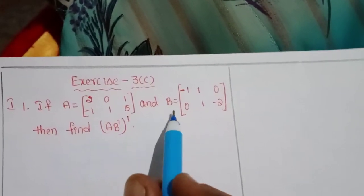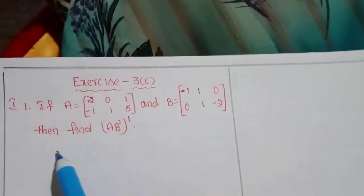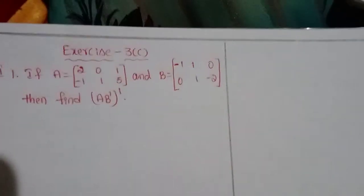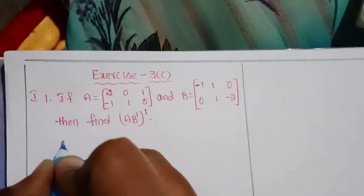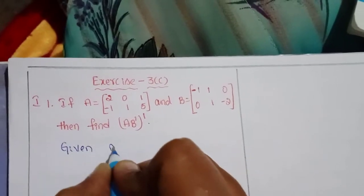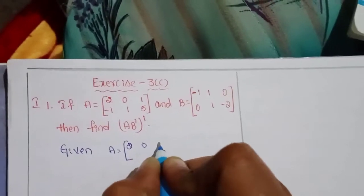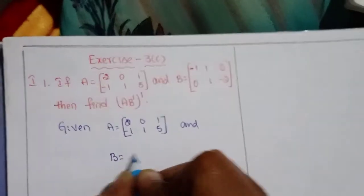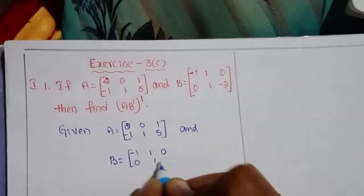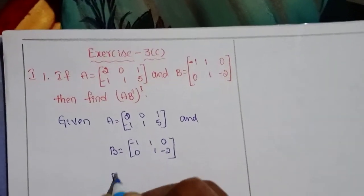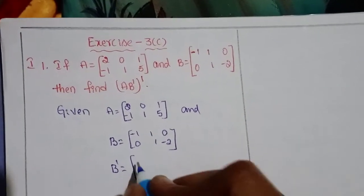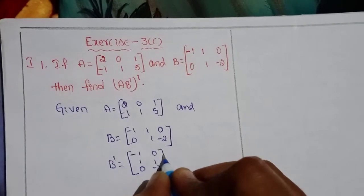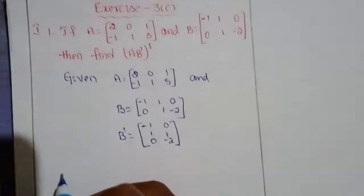Problem 1: If A = [2, 0, 1; -1, 1, 5] and B = [-1, 1, 0; 0, 1, -2], find (AB^T)^T. Solution: Given A = [2, 0, 1; -1, 1, 5] and B = [-1, 1, 0; 0, 1, -2]. First we find B transpose.